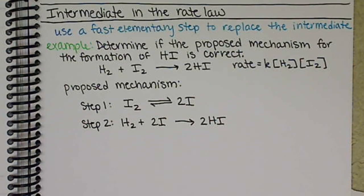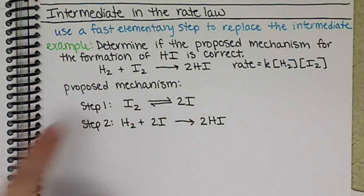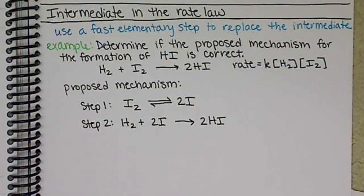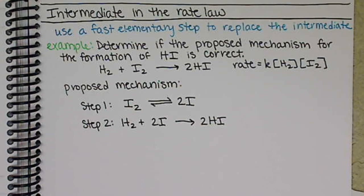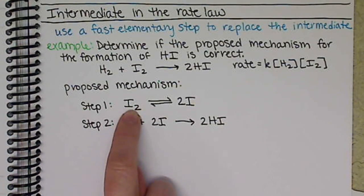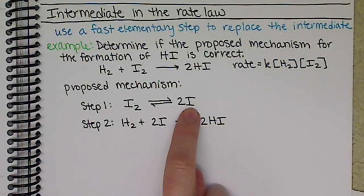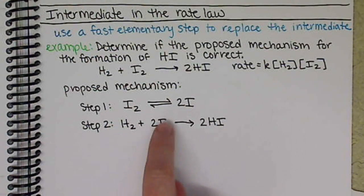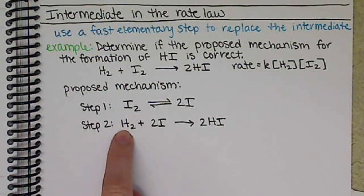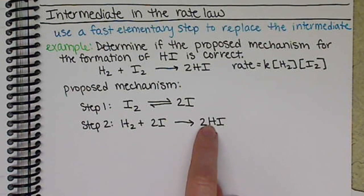We're looking at the formation of hydrogen iodide from combining hydrogen and iodine. We know that our rate law is first order with respect to hydrogen and first order with respect to iodine — second order overall. The proposed mechanism has a first step of an iodine molecule breaking apart into two iodine atoms, then those two iodine atoms interacting with a hydrogen molecule to form two hydrogen iodides.